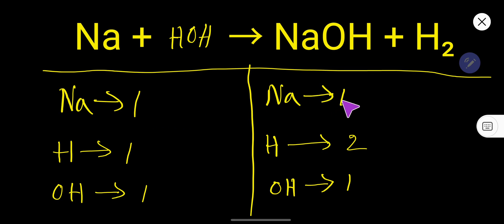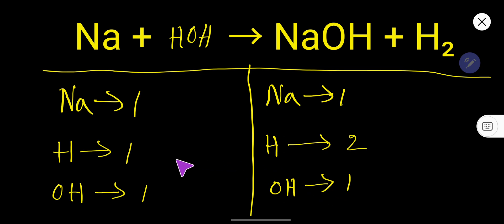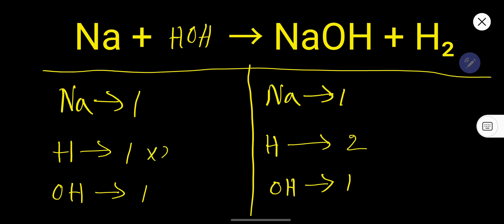Sodium: 1 on each side, so sodium is already balanced. Hydroxide: 1 on each side, so hydroxide is already balanced. But hydrogen is not balanced — here 1, here 2. So to balance hydrogen, we can multiply here simply by 2, that gives us 2.